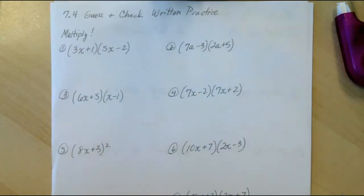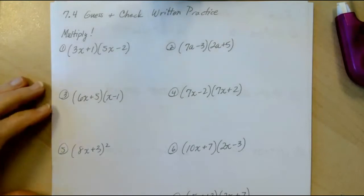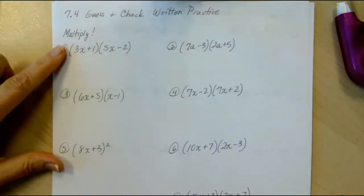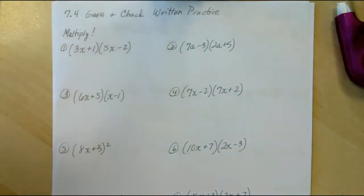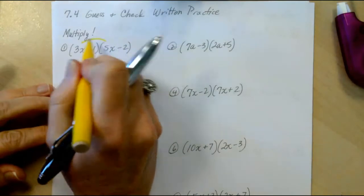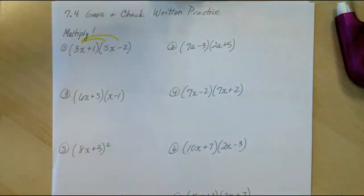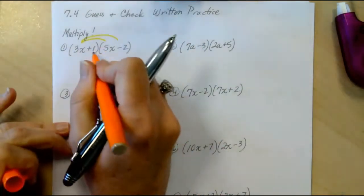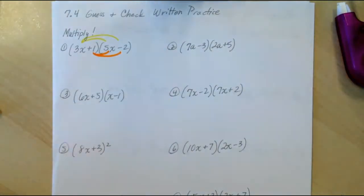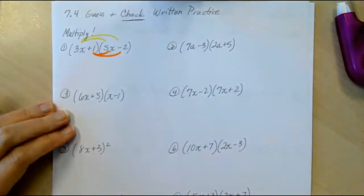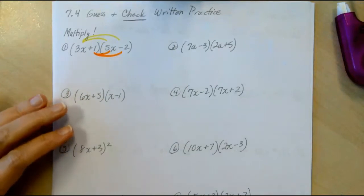We're not going to check every single one of them. We're just going to spot check a few of the problems. The front was all about reviewing multiplication by using the distributive property. So just as a reminder here, first we distribute the 3x, and then we distribute the 1. And basically, this is how you check all of your guess and check problems.